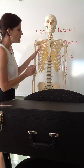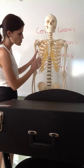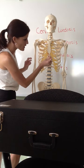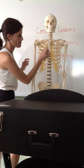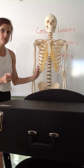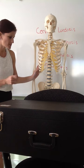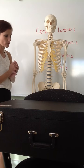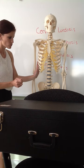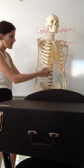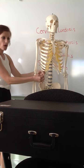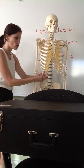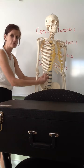The ribs can be split into true ribs and false ribs. The first 7 pairs are true ribs because their costal cartilages attach directly to the sternum. The bottom pairs are called false ribs because their cartilages piggyback onto the cartilage of the rib above them. Finally, the bottom 2 pairs are called floating ribs — they don't have any costal cartilage at all and are simply free-floating on the distal end.